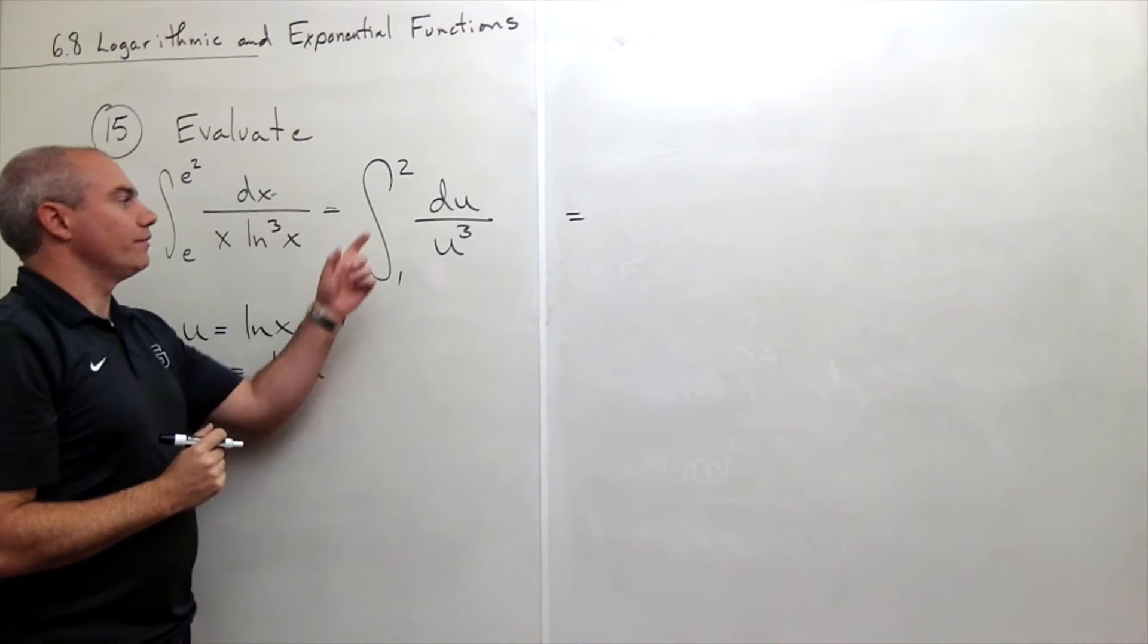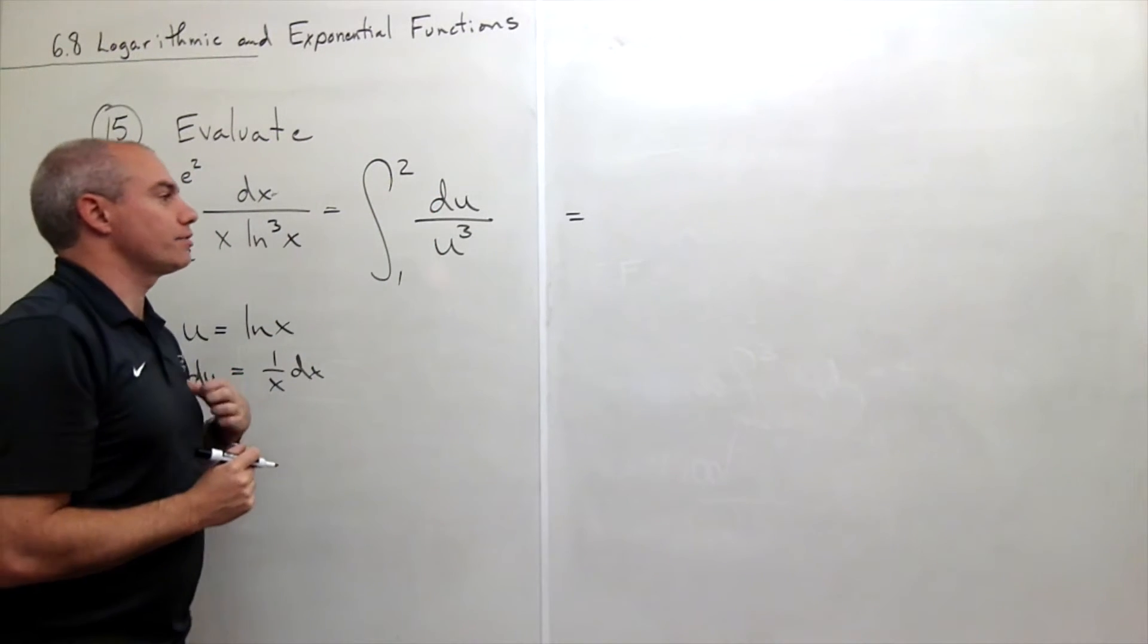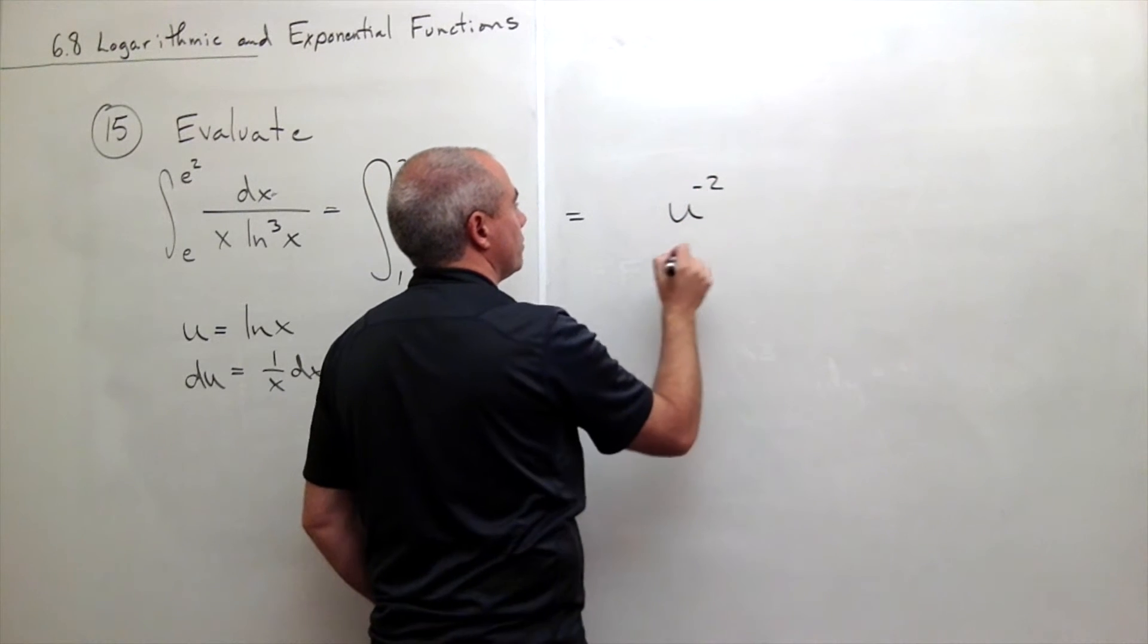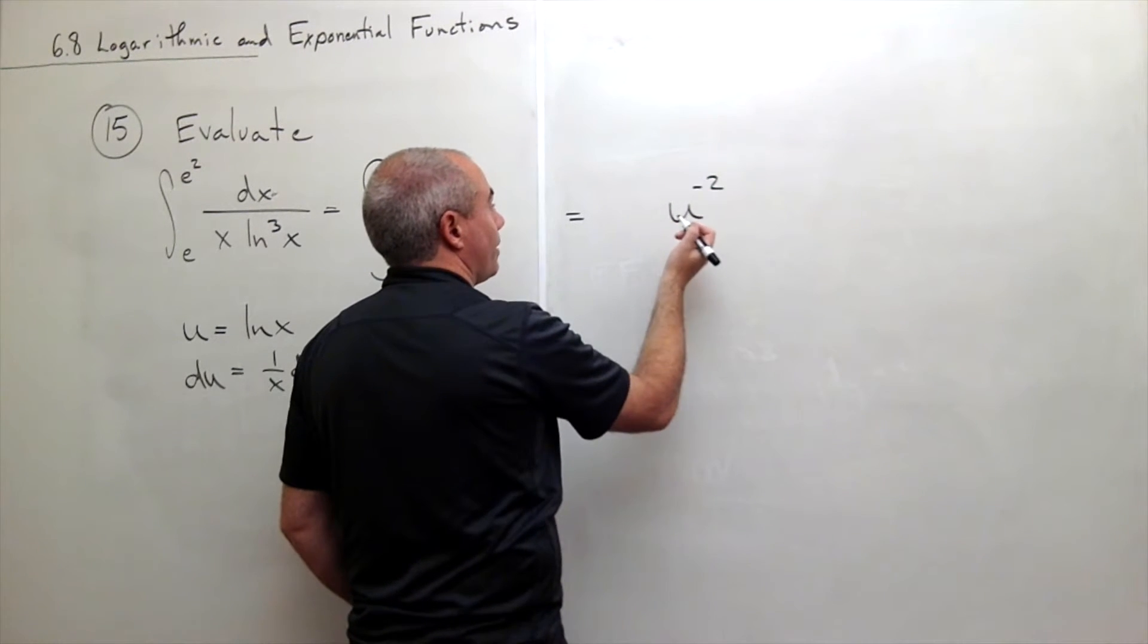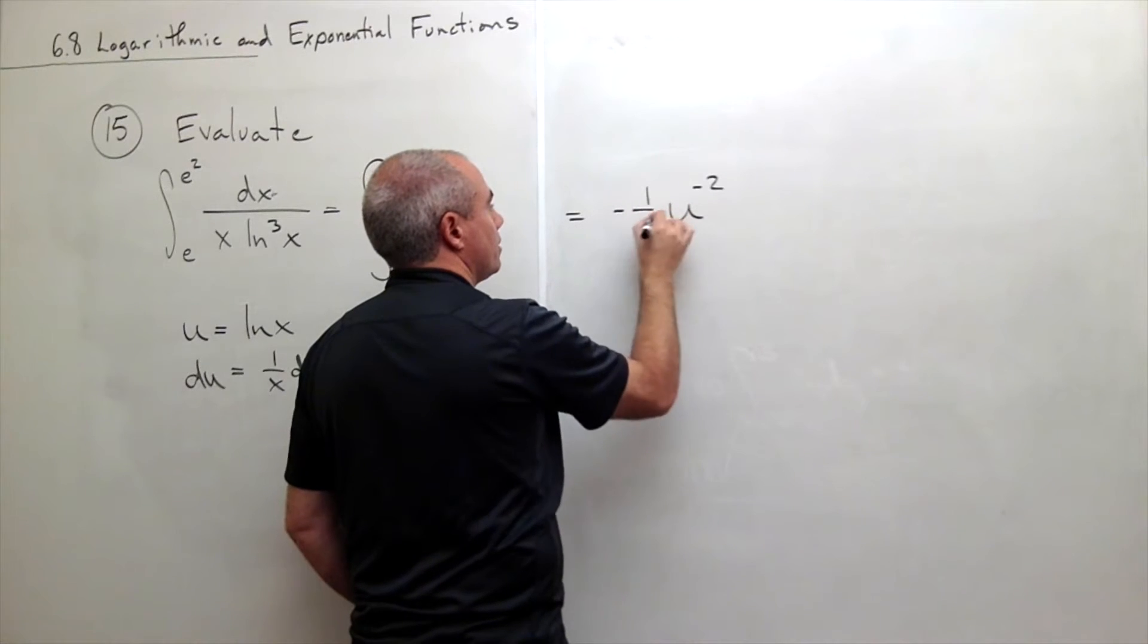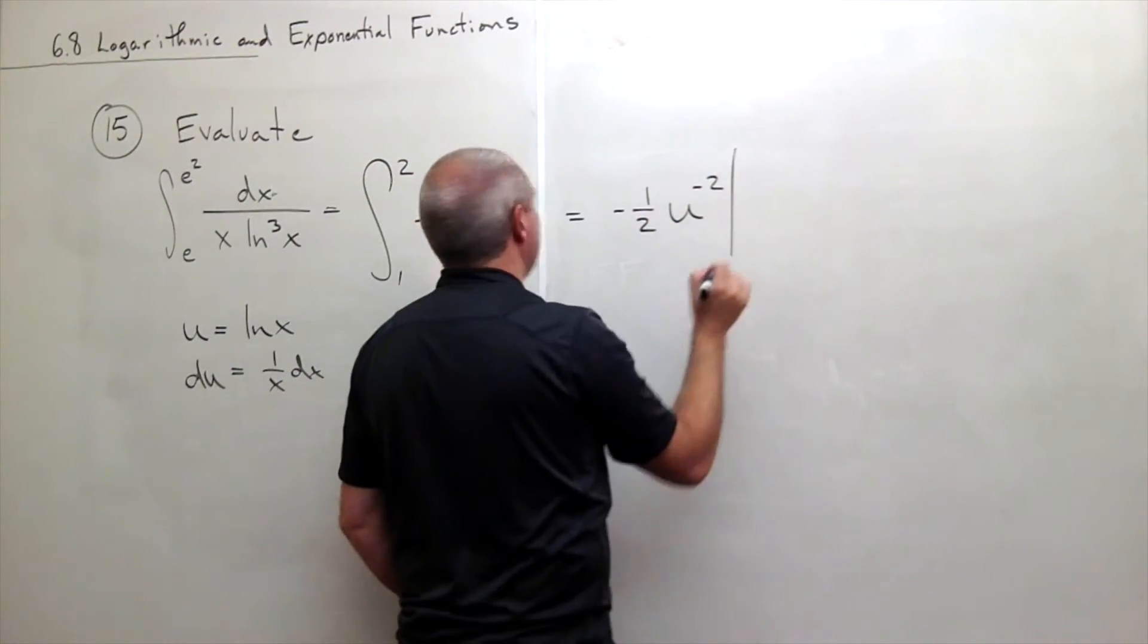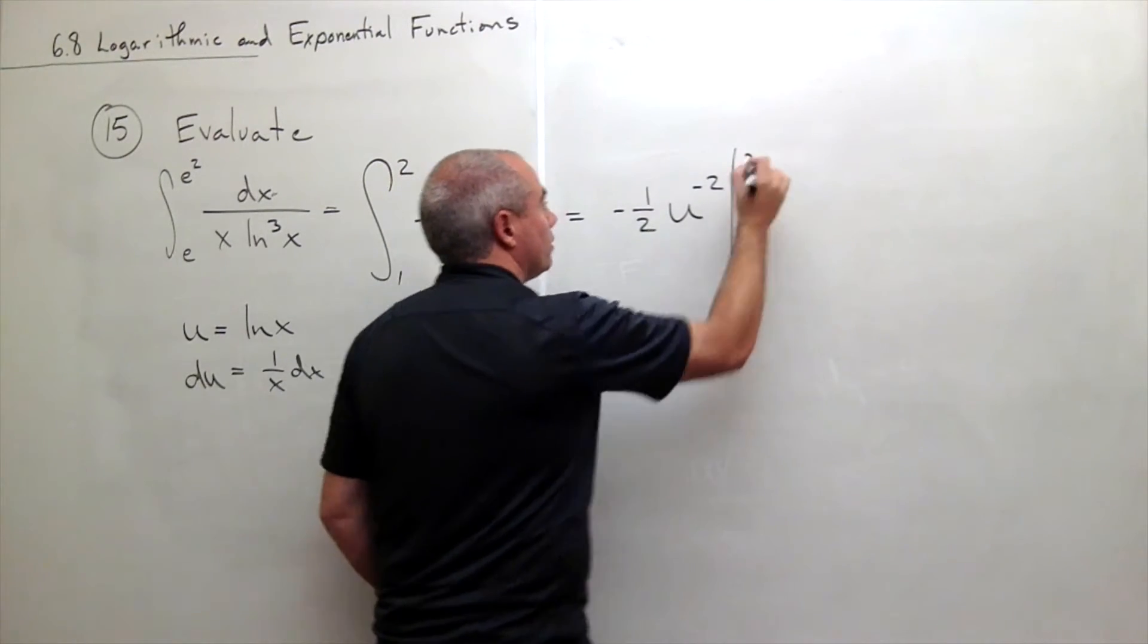The antiderivative of u to the minus 3 is u to the minus 2 divided by minus 2 or times negative 1 half. And that's evaluated from 1 to 2.